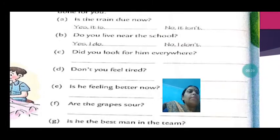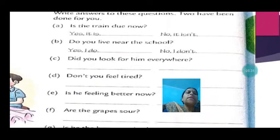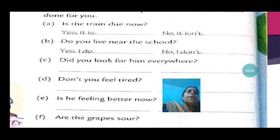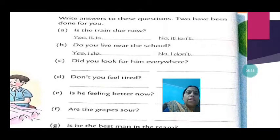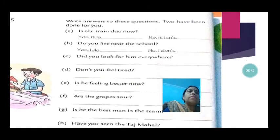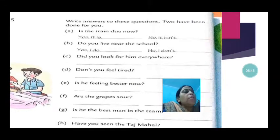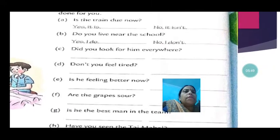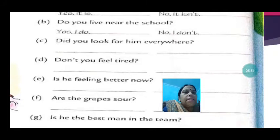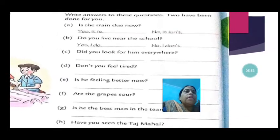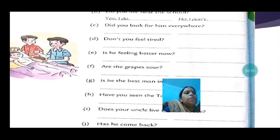Did you look for him everywhere? This is asking in the past form. If you had looked, you will say yes, I did. If you didn't look, no, I didn't. Don't you feel tired? If you feel tired, you will write yes, I do. If you don't, no, I don't.